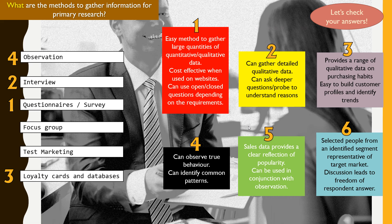Number four is a method to gather information through observation. Basically, you sit in, for example, in malls and you look at what people buy. You observe their true behavior and can identify common patterns — whether they react to sales immediately or to a certain color or a certain design. It of course requires you to be very dedicated in observing people.